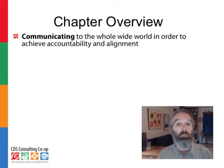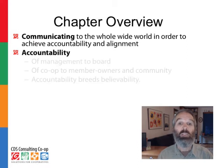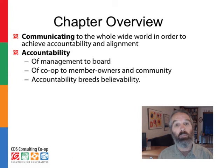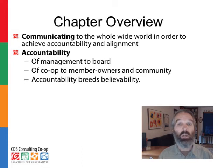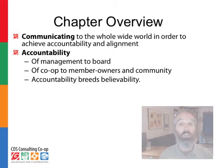Two key pieces of communication, two key goals: one, accountability; two, alignment. Accountability is first from management to the board, so that the board knows the manager is doing his or her job and that the co-op is accomplishing what they want it to accomplish. Secondly, the co-op itself is accountable to the member owners, and the ends report can be a way to start demonstrating that.